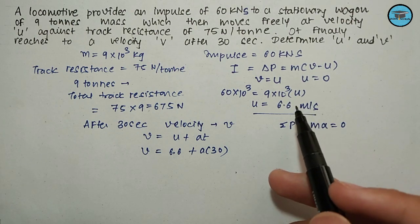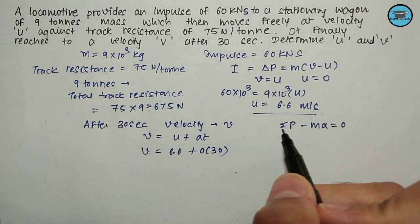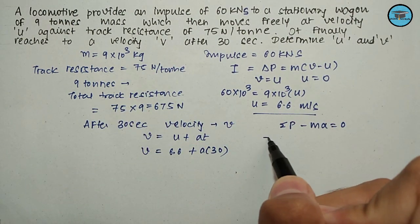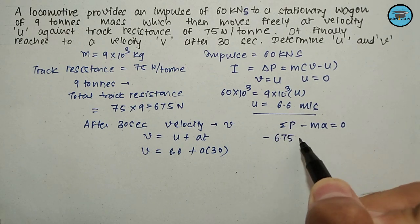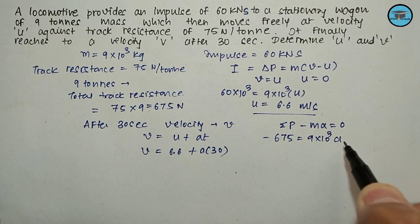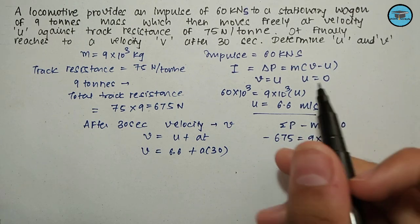That is -675 = 9 × 10³ × a, so the value of a equals -75 × 10⁻³ meters per second squared.